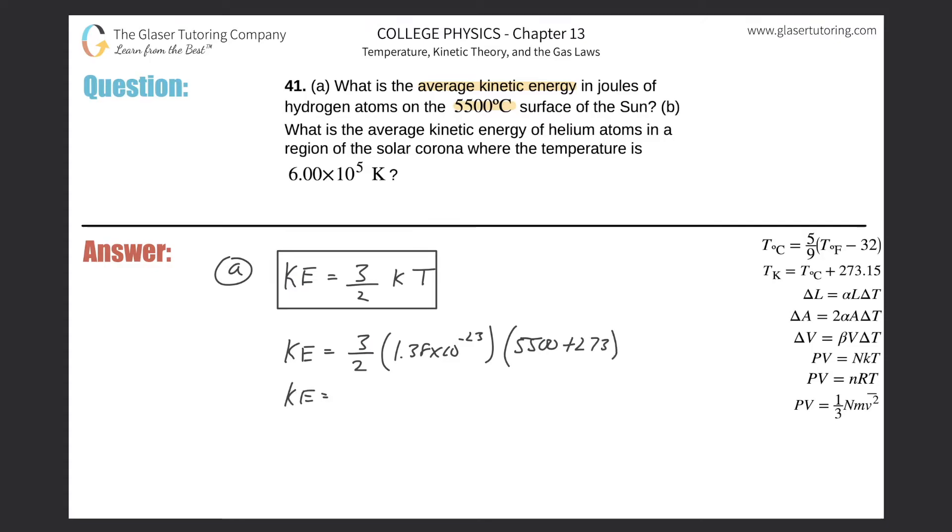And simply all we now need to do is calculate. So this is 3 divided by 2 multiplied by 1.38 times 10 to the minus 23 multiplied by parenthesis 5500 plus 273. So we get a value here of about 1.20, I'm just going to do three sig figs. So this is raised to the negative 19th and that is in joules. So kinetic energy is in joules. And there you go. That's letter A.